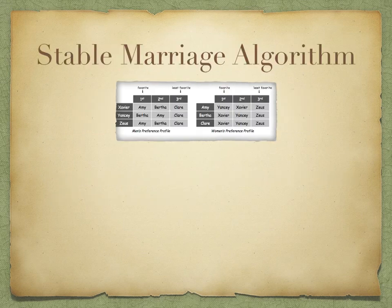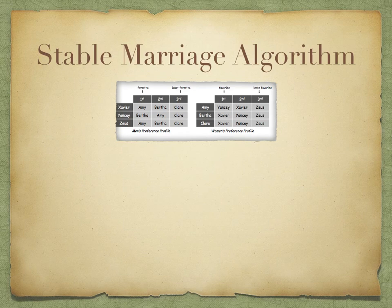There is an algorithm to achieve this. It is called the stable marriage algorithm. It goes like this. Every morning, each man proposes to the most preferred woman on his list who has not yet rejected him. Every afternoon, each woman collects all the proposals she received in the morning. To the man she likes best, she responds "maybe, come back tomorrow" — she now has him on a string.